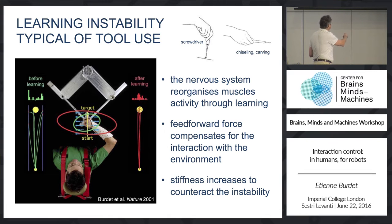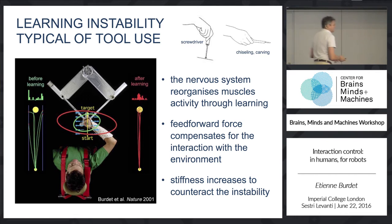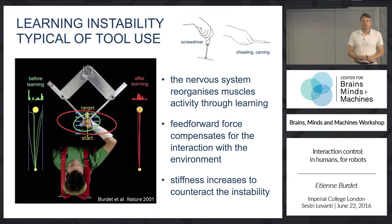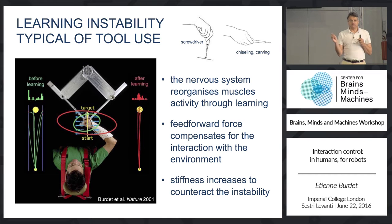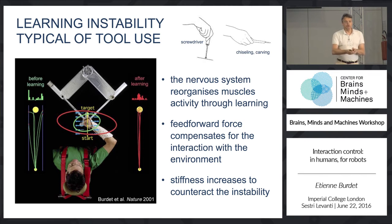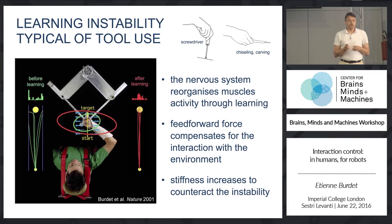But what actually happens is that you increase stiffness only along the direction of instability, and not at all in the other direction. This was predicted by Neville Hogan in 1985, but people didn't find it — they found different results. What is very strange is that it means the brain would be able to pick exactly the right muscle at the right time. We thought the brain must be very clever to do that.